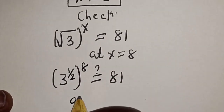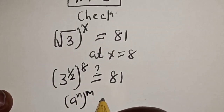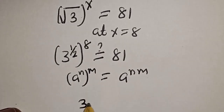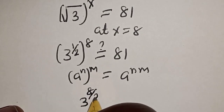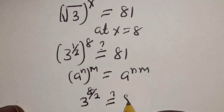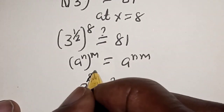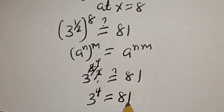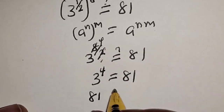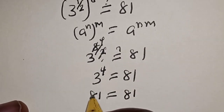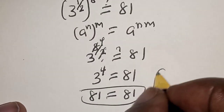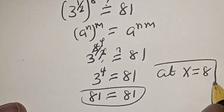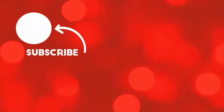Using the rule a raised to power n raised to power m equals a raised to power n times m, this becomes 3 raised to power 8 over 2, which is 3 raised to power 4, equal to 81. The left-hand side equals 81, which satisfies the equation at s equals 8. If you enjoyed the class, please like, share, comment and subscribe.